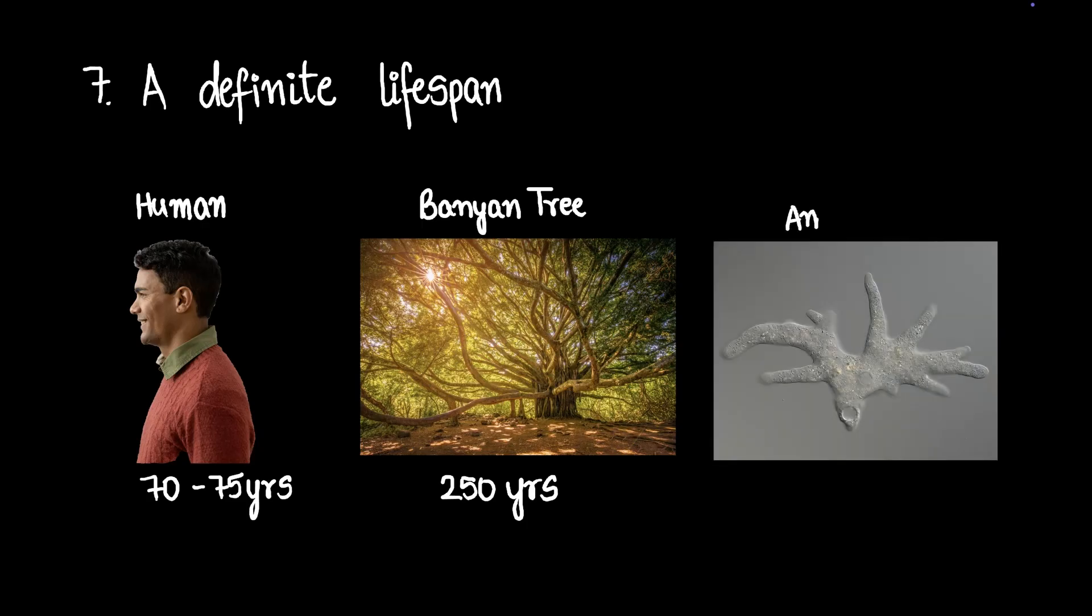For example, an amoeba, those single-celled organisms, like the one we saw that split into two, those live for a few days. So different organisms live for different periods of time. And that definite lifespan is a characteristic of living organisms.